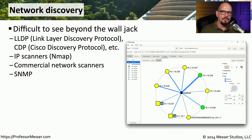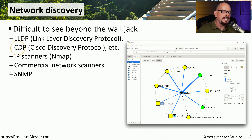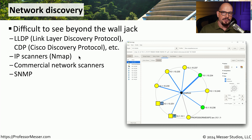When you sit down to troubleshoot a network issue, you're starting with no information, so we need to start gathering more details using a number of different techniques. These would commonly include LLDP, which is a link layer discovery protocol on switches, and CDP, which is Cisco's version called the Cisco Discovery Protocol. You might also use scanners that perform ping scans or port scans of the network to identify devices that may be up and running.